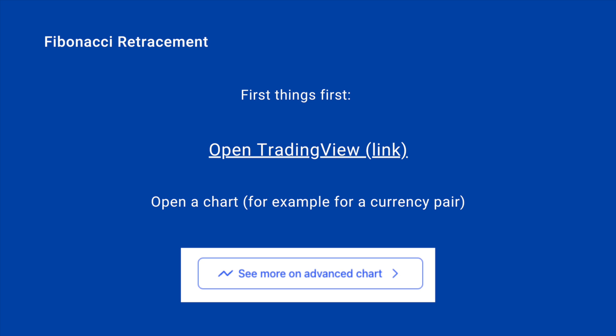First things first, open TradingView — if you don't have it yet I have a link in the description below. Then open a chart; for example, open a currency pair. As I'm trading Forex I always have a currency pair open somewhere. Then go to "See more on advanced chart" and click there.